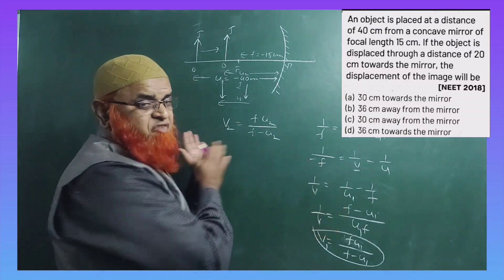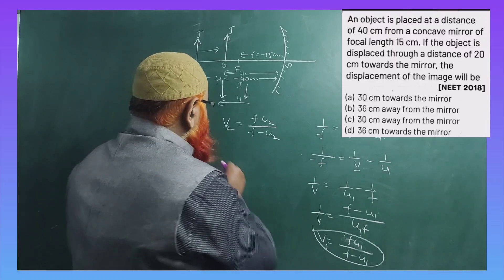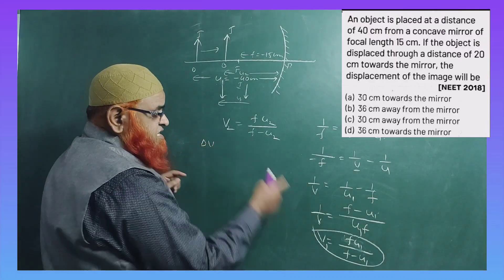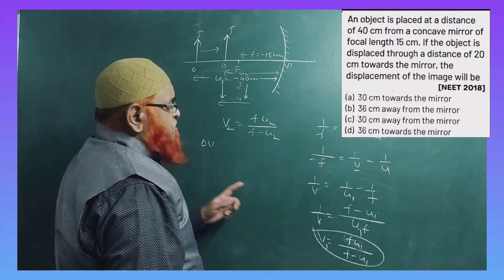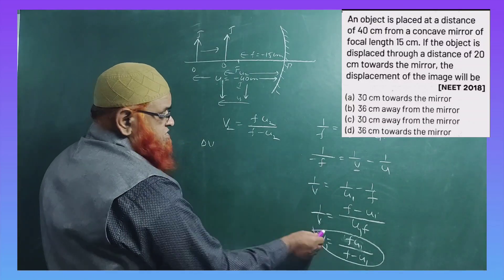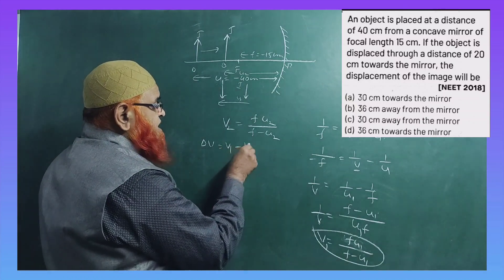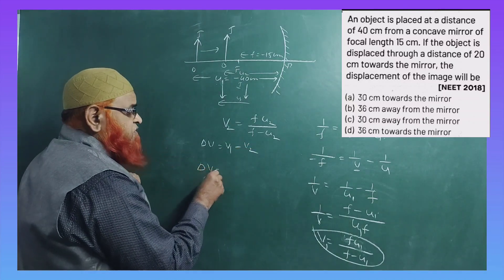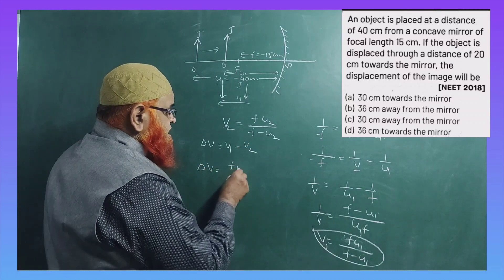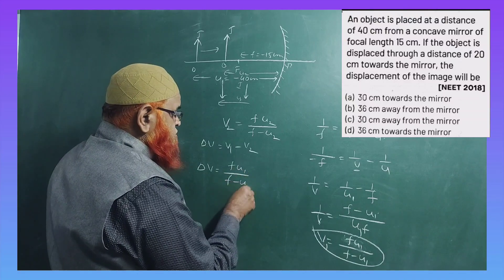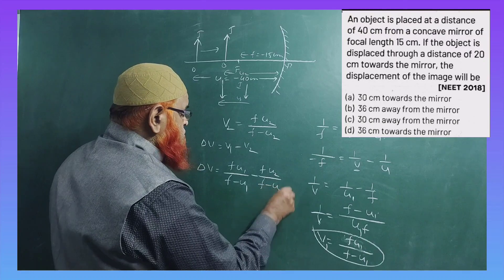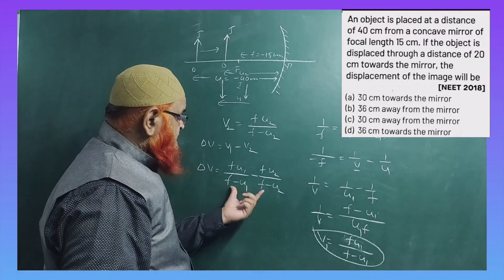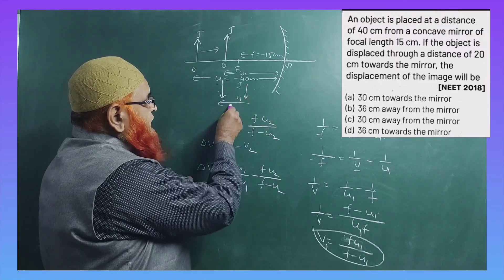So you have to find out the shift of image. Shift of image means you will consider change in the displacements of these final images. So first of all, if you consider this distance, that is v1 minus v2. Delta v is equal to f·u1/(f-u1) minus f·u2/(f-u2). So this is the shift of the image from here to here.